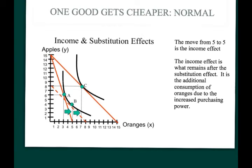What we do is take the new ratio of oranges to apples—basically a one-to-one ratio in this example—and ask: what if that ratio existed at the old level of wealth? We take the slope of the new budget constraint and move it back until it's just tangent with the old indifference curve. That dotted line represents the new budget constraint parallelly shifted back to the old indifference curve, giving us the old level of wealth but the new price ratio.